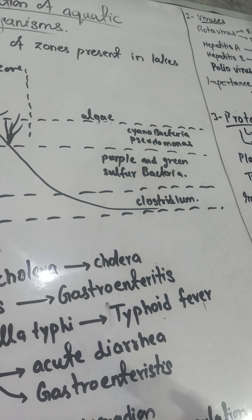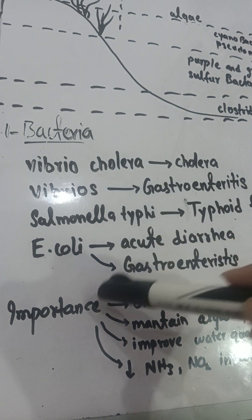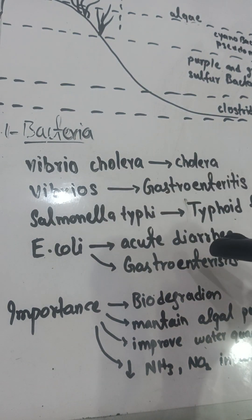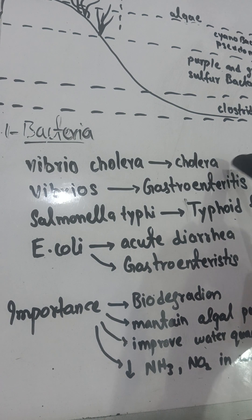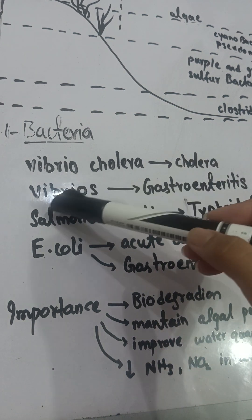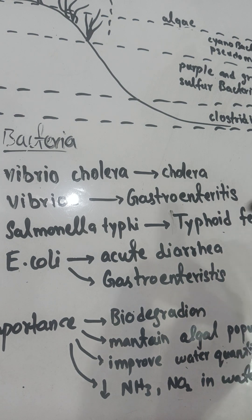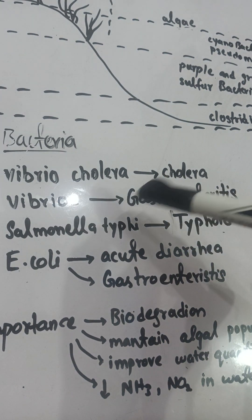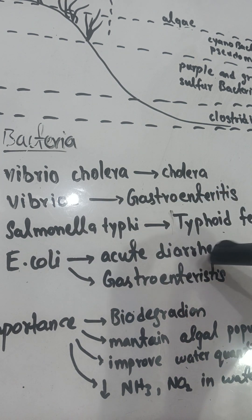Now we will study each aquatic organism one by one, discussing their benefits and disadvantages. The first microorganism present in water is bacteria. Some bacteria cause diseases: Vibrio cholerae causes cholera, Vibrio species cause gastroenteritis, Salmonella typhi causes typhoid fever, and E. coli causes acute diarrhea and gastroenteritis.